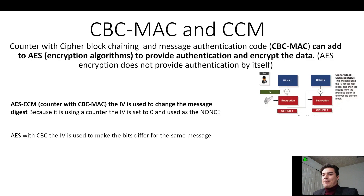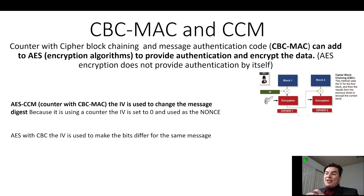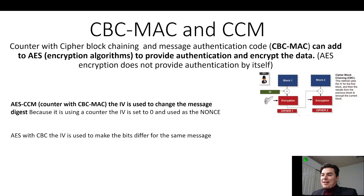So CBC-MAC and CCMP — that's Counter with Cipher Block Chaining and Message Authentication Code. It's going to add authentication to the encryption of AES, because AES encryption does not automatically provide authentication. It's going to verify the person is who they say they are, that they sent it, and that the integrity of the data has not changed.